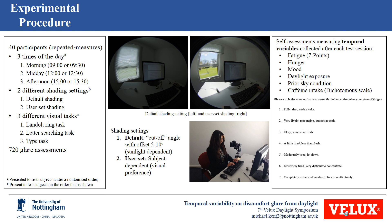At the end of each test session, participants were asked to give self-assessed reports of several temporal variables — variables that vary across the time of day but cannot be experimentally controlled, such as fatigue, hunger, mood, etc. When possible, all these temporal variables were measured on the same level of measurement; except for caffeine intake, all other variables were measured using seven-point scales.